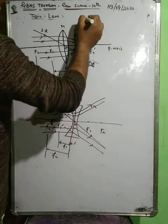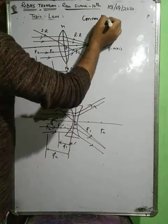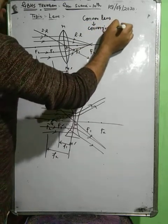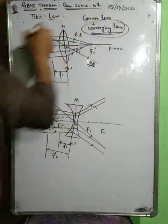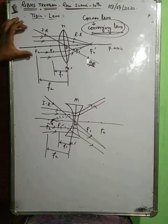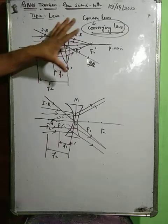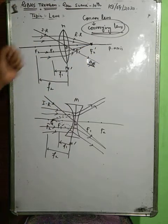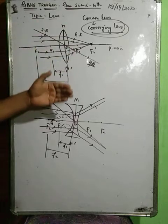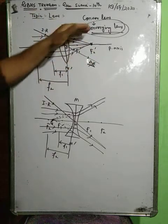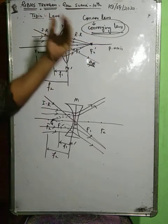Why is convex lens named converging lens? Because when a parallel beam of incident light rays is allowed to fall on the convex lens, after refraction all the refracted rays converge and meet at a single point on the principal axis called the focus. That is why convex lens is also named as converging lens.